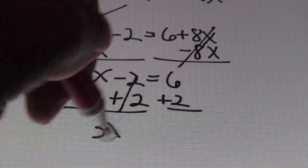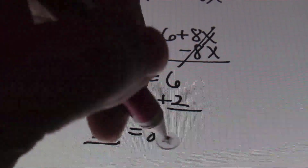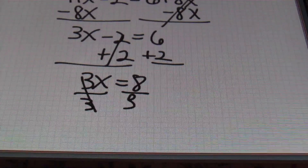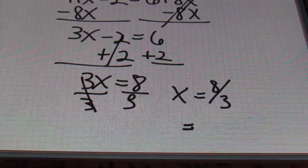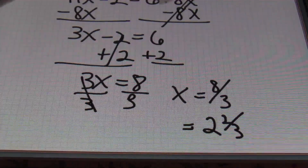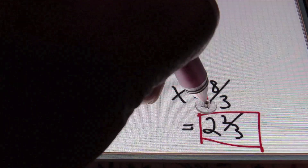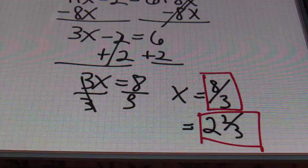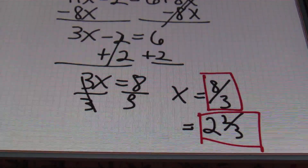Isolating the term with the variable — that three x — I'm going to add two to both sides. Bringing down three x, which equals eight. Dividing both sides by three, we'll end up with x equals eight-thirds. Or you can write this as a mixed number: two and two-thirds. Either one of these answers is going to be correct.